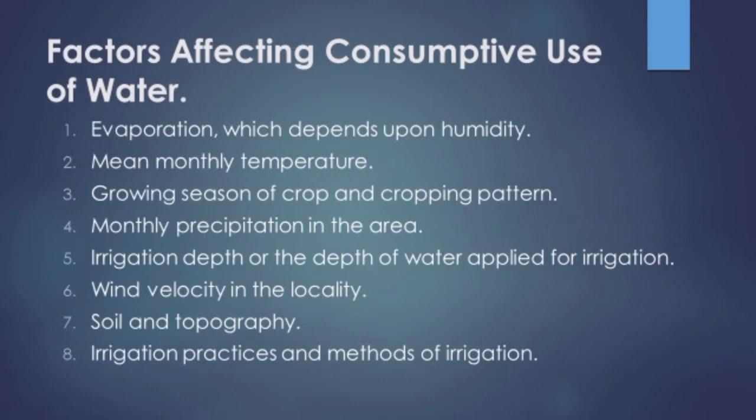The next factor is irrigation depth, which is directly proportional to both evaporation and transpiration — just as precipitation affects them, so does irrigation depth. Wind velocity in the locality will also directly affect evaporation. Soil and topography are additional factors affecting evaporation and consumptive use of water.